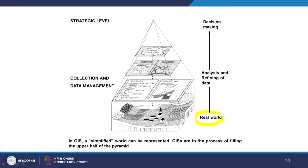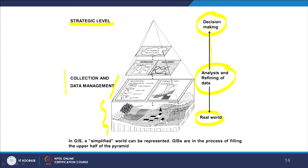Analysis and refining of data goes to decision makers. Decision makers accept certain things but ask for further analysis. We can come back to the real world, enrich our analysis, and go back again to decision makers. The real world is segmented into different layers. People at the top are at the strategic level; some are in data collection and management — the real GIS experts. The caption says: a simplified world can be represented, not the real world itself.